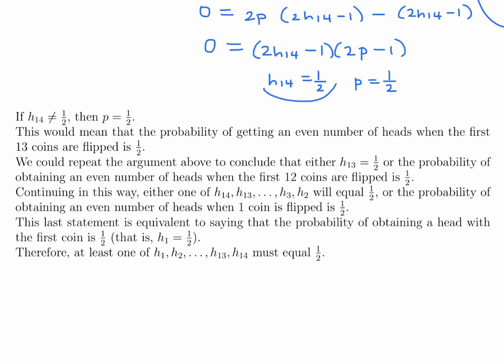If h14 = 1/2, we are done — the answer is yes. If h14 ≠ 1/2, then p = 1/2, meaning the probability of an even number of heads from the first 13 coins is 1/2. We repeat the same argument: either h13 = 1/2 or the probability from the first 12 coins is 1/2. Continuing in this way, either one of h14 down to h2 equals 1/2, or the probability of a head with the first coin is 1/2, meaning h1 = 1/2. Therefore at least one of h1 through h14 must equal 1/2.